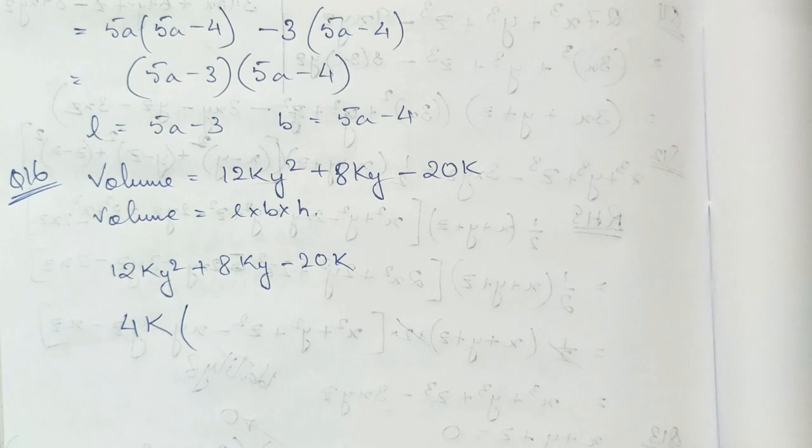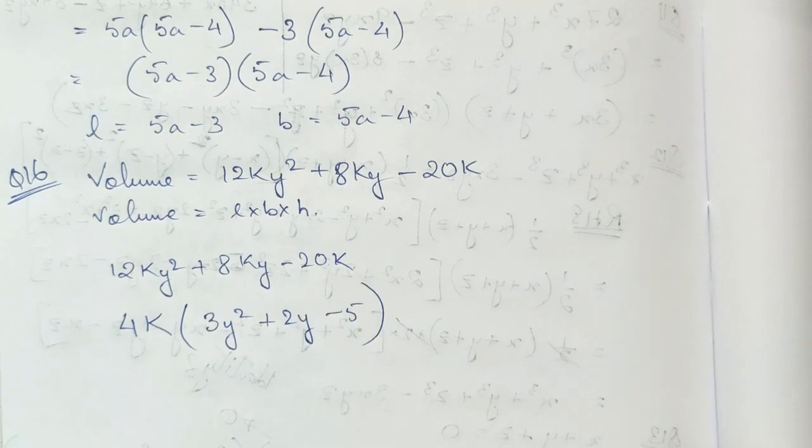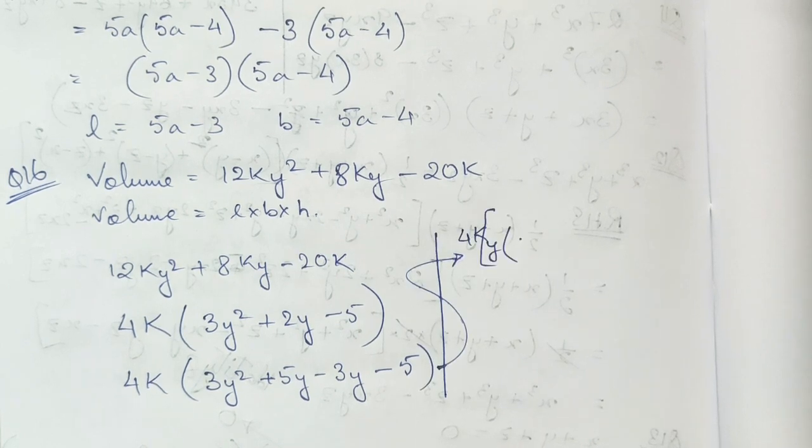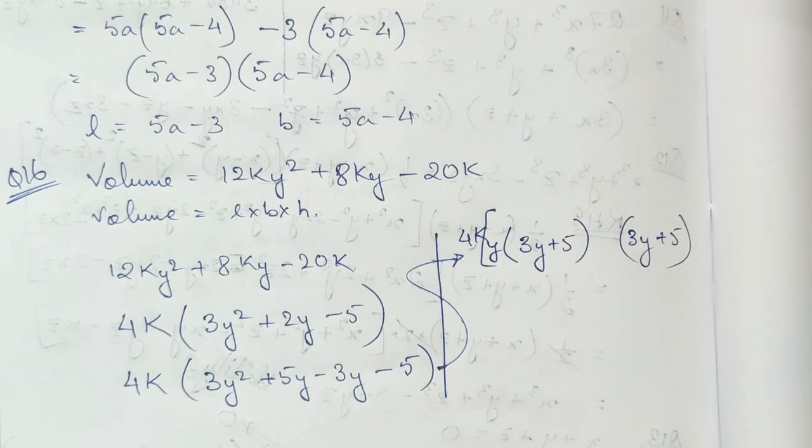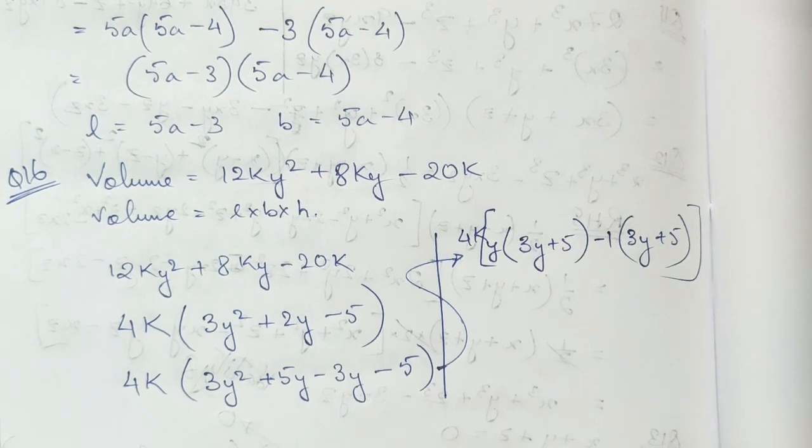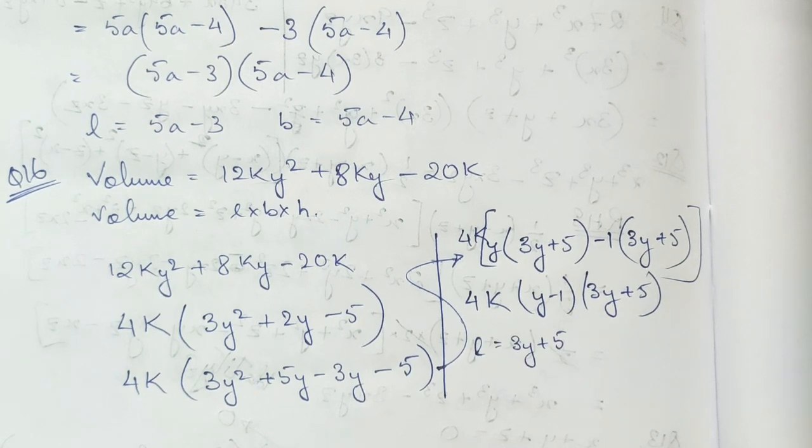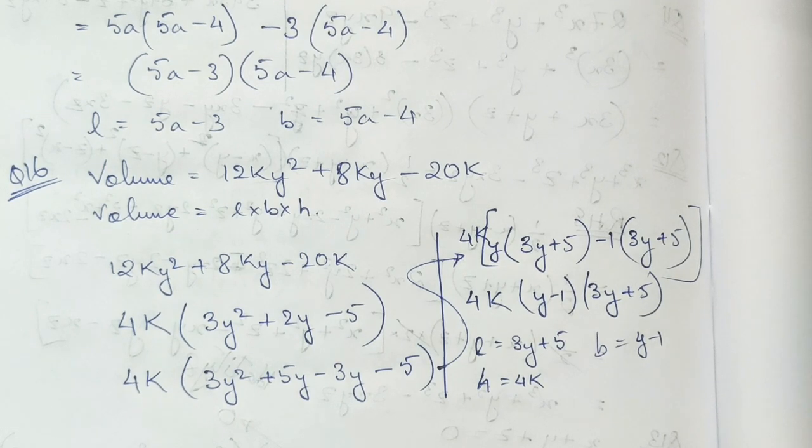Thus we will get this equation, and 5 and 3 were the golden numbers. Why we can take common, and from that side minus 1 should be multiplied. So these are the required factors of this volume. We can take any of them as length, breadth, or height.